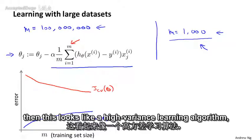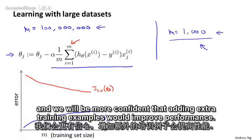and if your cross validation set objective jcv of theta were to look like this, then it looks like this is a high variance learning algorithm. And we would be more confident that adding extra training examples would improve performance.